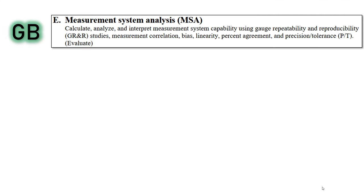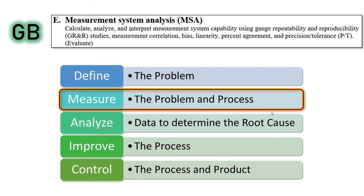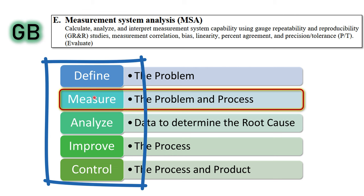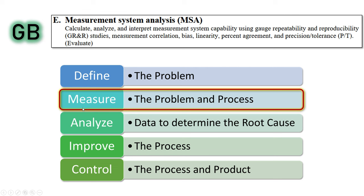Let's take a look at today's agenda. This is Greenbelt Academy, and we're preparing for the Greenbelt exam, and gauge R&R is one of these really important topics on the Greenbelt exam. If you are preparing for the Greenbelt exam, you'll know that that exam is structured according to the DMAIC process — define, measure, analyze, improve, control. As part of the measure phase in DMAIC, we're measuring our problem, our product, and our process. Considering your measurement system is a really important part of measuring your product and process, which is how this ties into the Greenbelt body of knowledge.